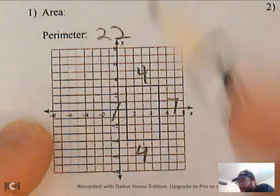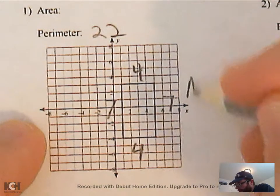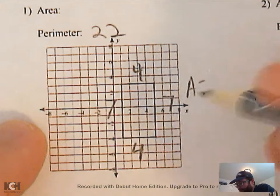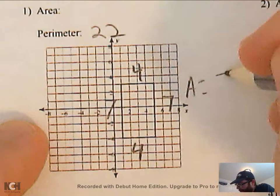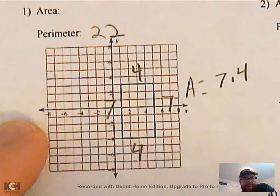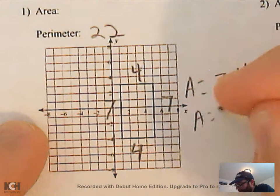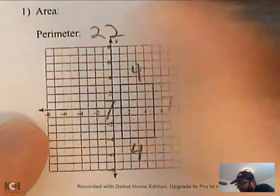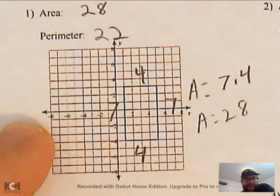And for the area, it's just length times width. So area is going to equal my length — we'll call it seven — times width four. It doesn't matter which you call which, but seven times four is 28. So area is equal to 28.